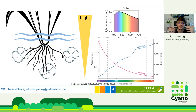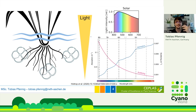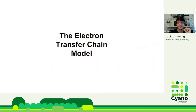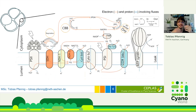Our question became how the cyanobacteria would behave under such different light quality conditions. Being computational life scientists, we wanted to use a mechanistic model to investigate what the cyanobacteria would do under these light conditions. Sadly, no appropriate model was available for what we were interested in, so we decided to create our own model of cyanobacterial photosynthesis — the electron transfer chain model.